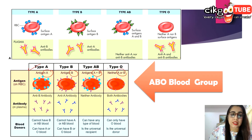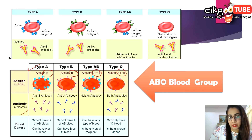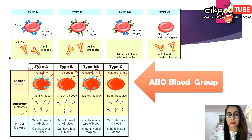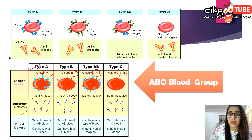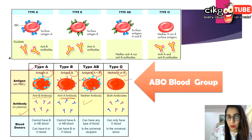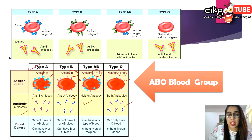For the antibodies in the plasma: if you have antigen A on your red blood cells, your blood plasma has the anti-B antibody. If you have antigen B, you have anti-A antibodies in the plasma. For type AB, since you have both antigens on the red blood cells, you have no antibodies in the blood plasma. For type O, you have no antigens A or B on the red cells but you have both anti-A and anti-B antibodies in the blood plasma.